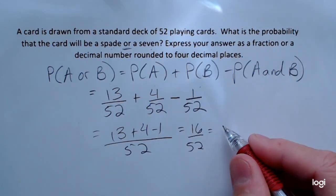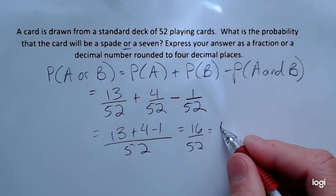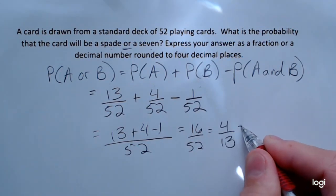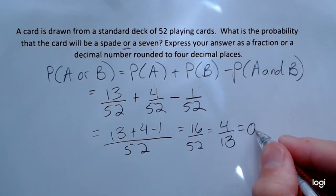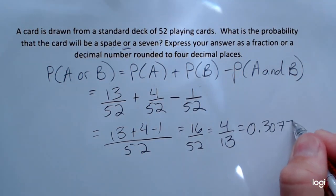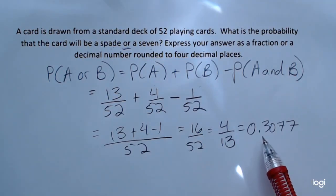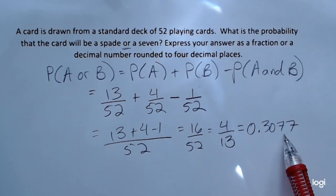The fraction in its most reduced form is going to be 4 out of 13. Or if you want to, you can convert that to a decimal. Rounding to four decimal places, I get 0.3077.